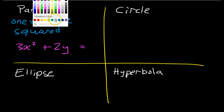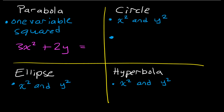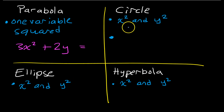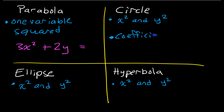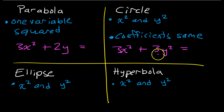For the rest of these — circle, ellipse, and hyperbola — you're going to have both variables squared: x squared and y squared. The rest of this is going to be about the coefficients of the x squared and the y squared. For a circle, both coefficients are the same. For example, if I had 3x squared plus 3y squared, I would know that I'm looking at a circle.